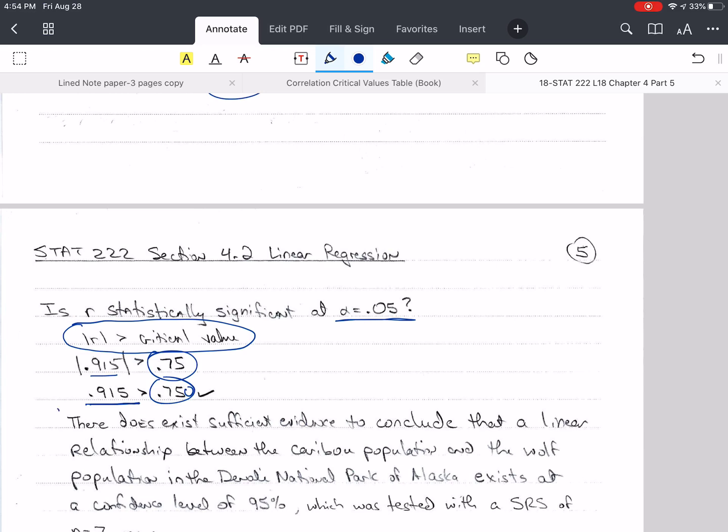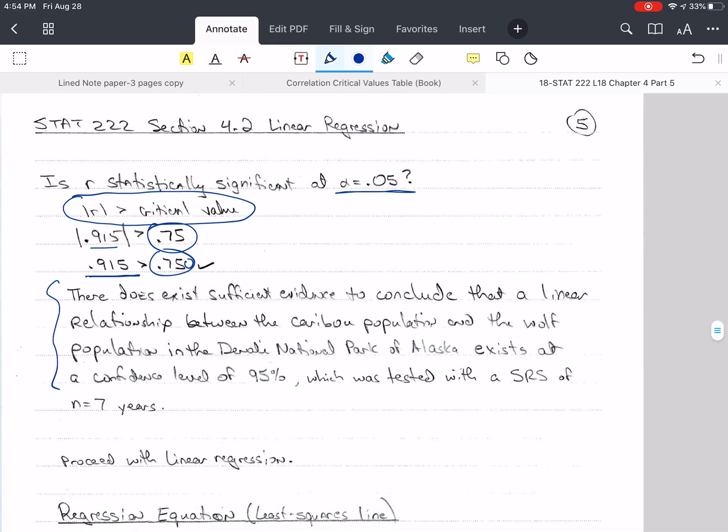So here's our conclusion sentence. Anytime you do the test, I want you to write this sentence: There does exist sufficient evidence to conclude that a linear relationship between the caribou population and the wolf population in Denali National Park of Alaska exists at a confidence level. Remember we took 1 minus alpha times 100 percent. Alpha was 0.05, so 1 minus 0.05 is 0.95, which is 95 percent, tested with a simple random sample of n equals 7 years.